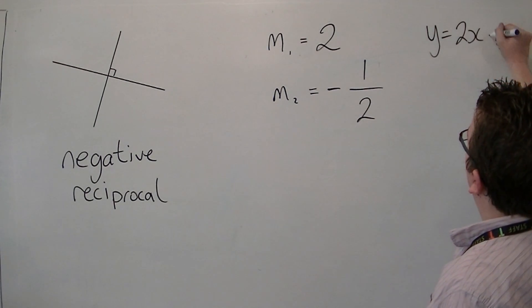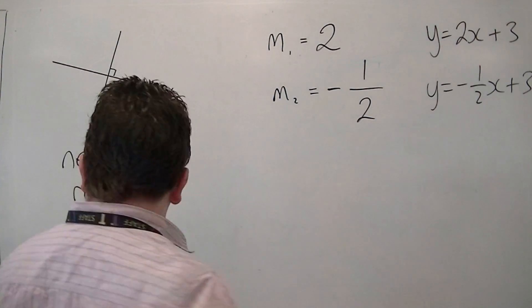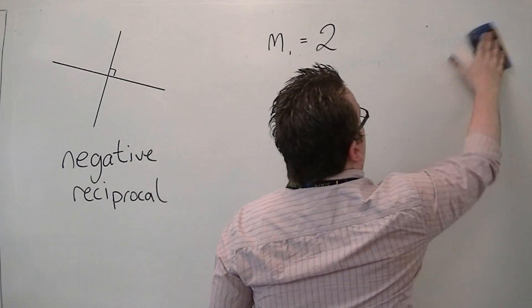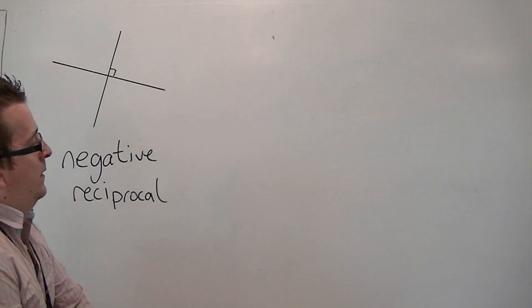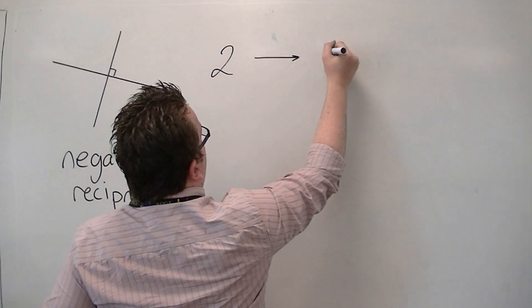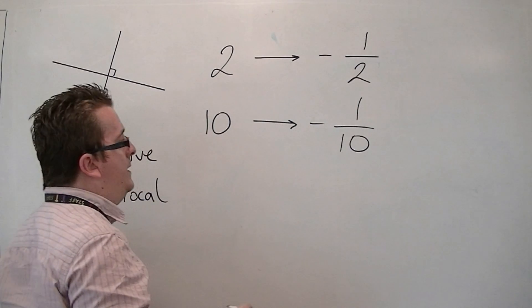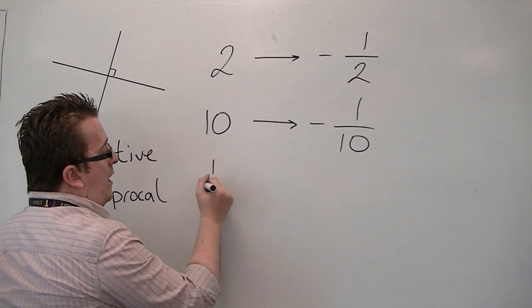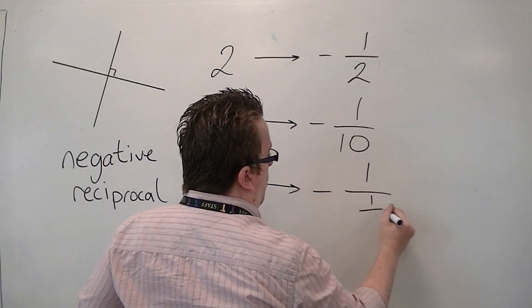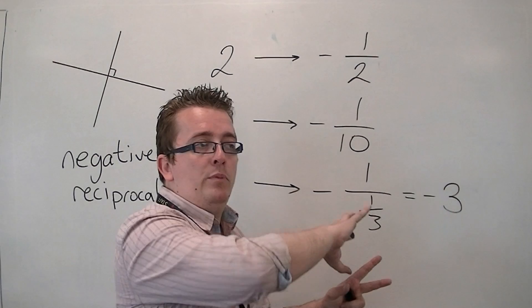If you had a line with gradient 2 and a line with gradient minus 1 half, then those two lines are perpendicular. So, y equals 2x plus 3, and y equals minus 1 half x plus 3. These are perpendicular. So, let's go through a bit more of what negative reciprocals are. If you had... So, we already know that 2, the negative reciprocal is minus 1 half. If you had 10, then the negative reciprocal would be minus 1 over 10. If you had 1 third, then the negative reciprocal would be minus 1 over 1 third, which is the same as minus 3. Because if you divide by a fraction, then remember, you multiply by the reciprocal.